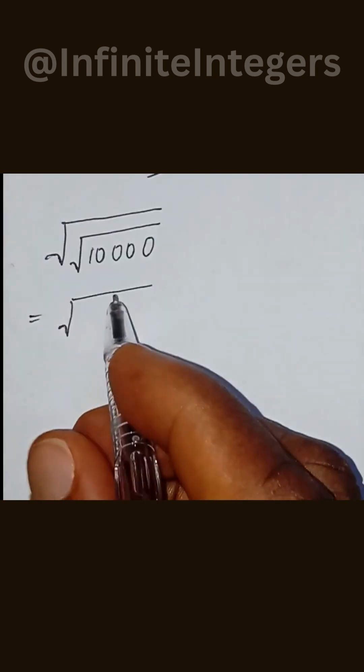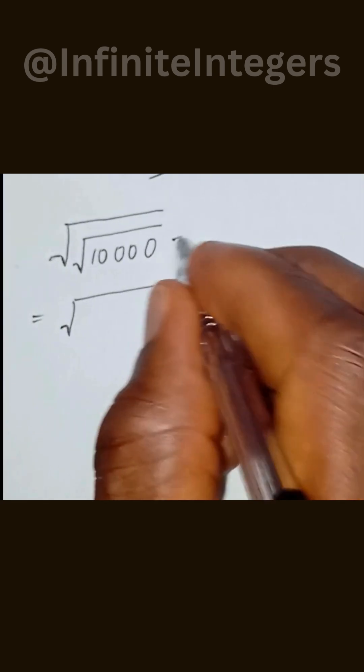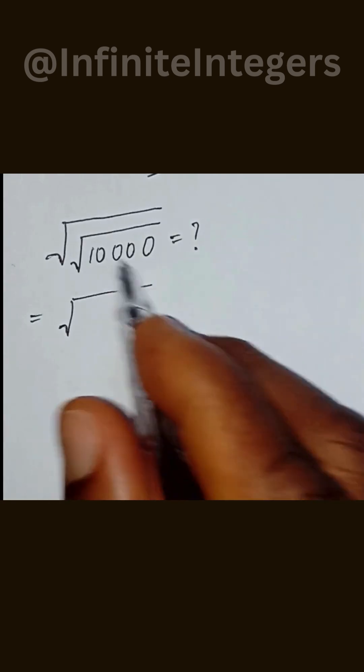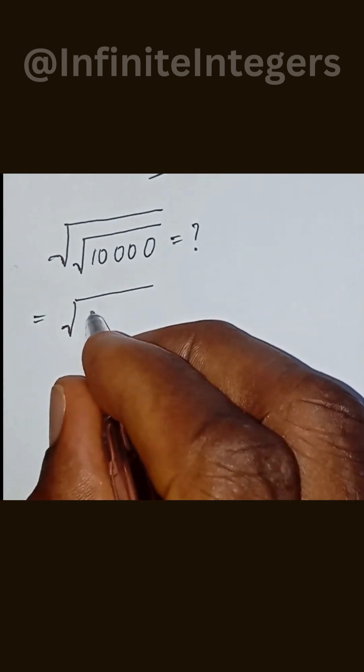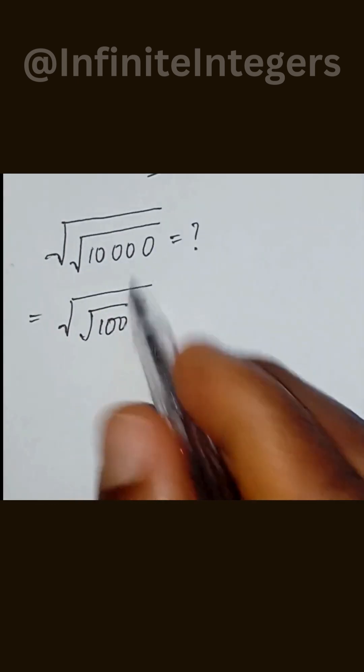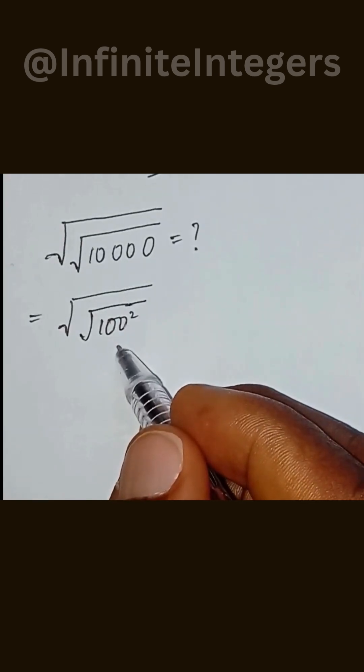Let's simplify this radical expression. What will be the simplification? So let's rewrite this as square root of 100 squared. We simplify this as square root of 100 squared.